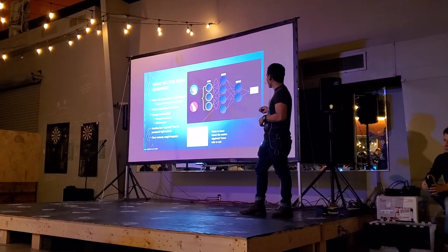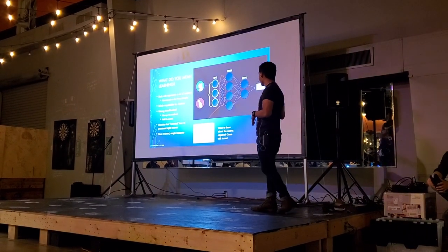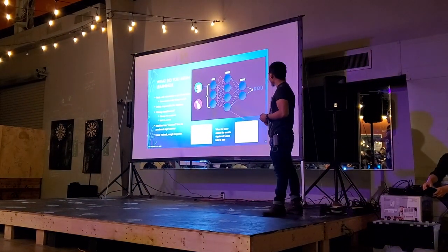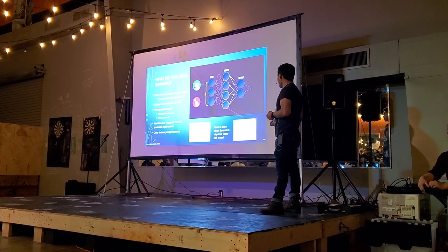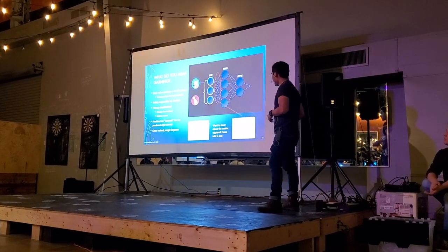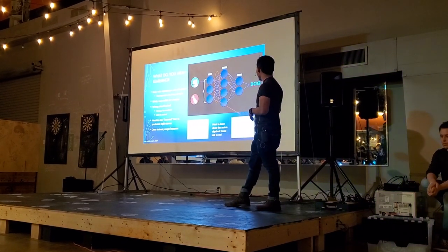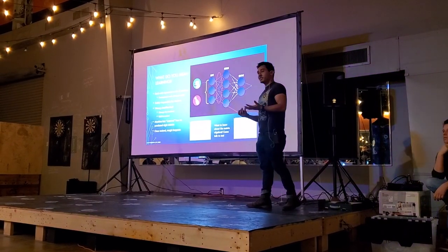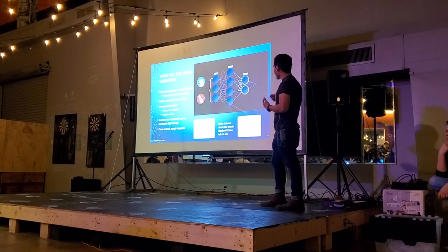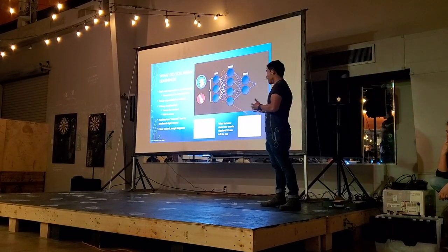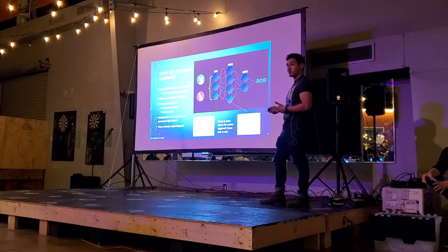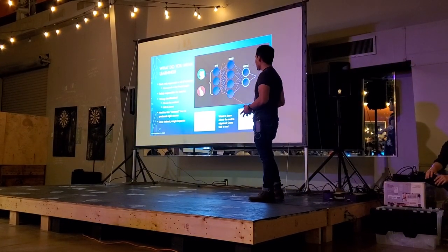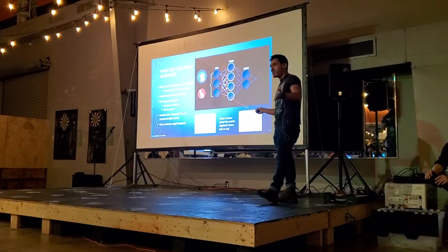Every time the network makes a wrong classification, a signal is sent back to these webs to change the values in a way that leads toward the correct answer. As you can see here, we've changed these numbers — the firing strengths — and that has now let the neural network correctly classify the image as a dog. This is what we mean by machine learning: we take a neural network and change these numbers until we can make the correct classification 90% of the time or better. Once that's done, we consider the network trained — and that's where all the magic happens.